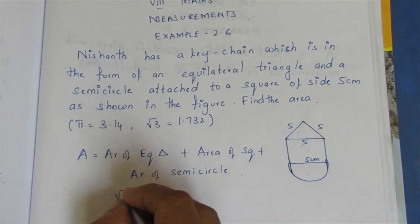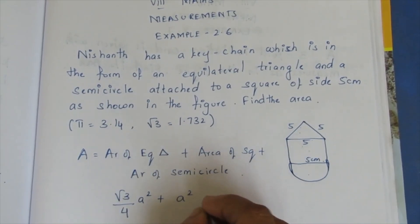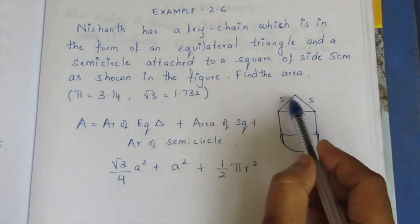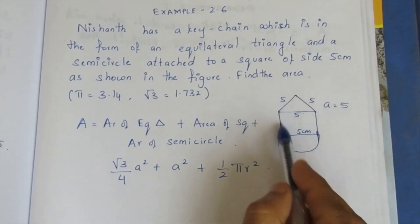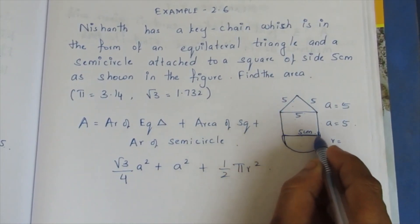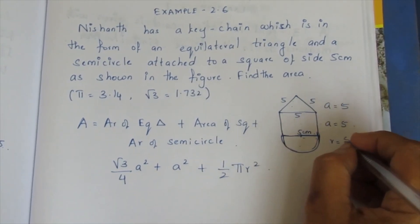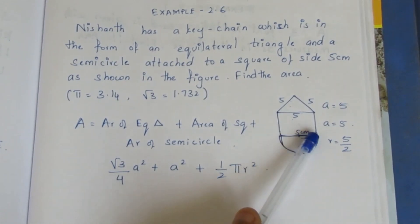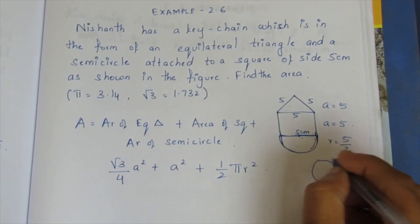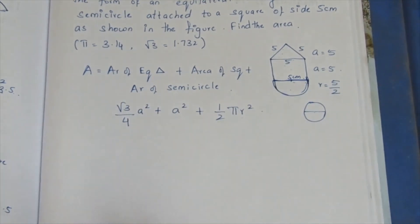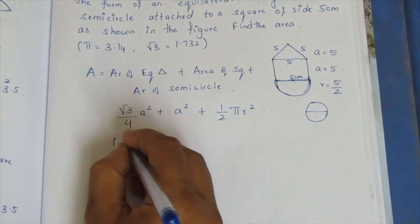The formula for area of equilateral triangle is (√3 / 4) × a². Area of square is a². Area of semicircle is (1/2) × π × r². For the semicircle, the diameter is 5, so the radius is 5 by 2. This is a semicircle — this is the diameter, which is 5, so radius is 5/2.